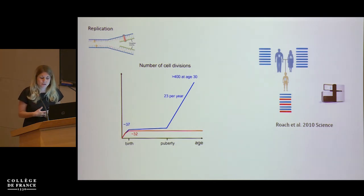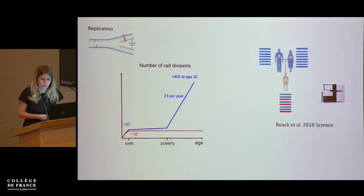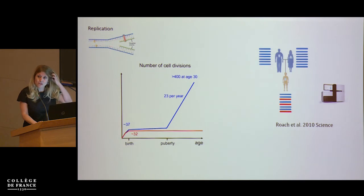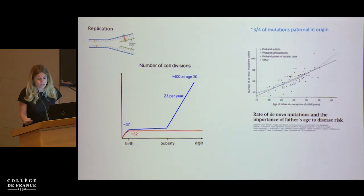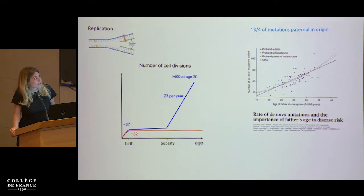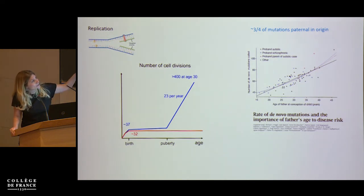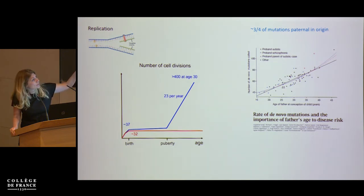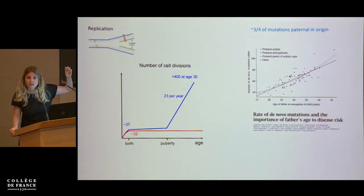There have been dozens of such studies in humans since the first application of this approach by Lee Hood's group. And they find pictures quite consistent with this cartoon. Here, for example, is a plot from a paper published by the company Decode, led by Augie Kong and colleagues, where about three quarters of mutations were paternal in origin.